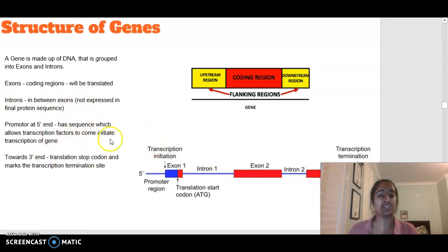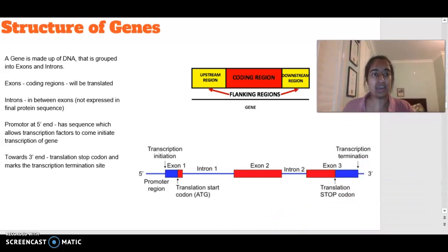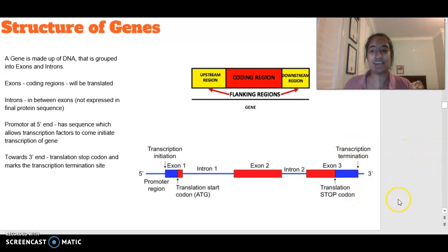In terms of looking at our structure, we have a promoter at the 5' end of our sequence, and it basically allows transcription factors to come and initiate the transcription. The RNA polymerase is going to connect, and that's where transcription is going to begin. At the 3' end, which is on the other side, we have what we call a translation stop codon, and that's going to mark the end or the transcription termination site.